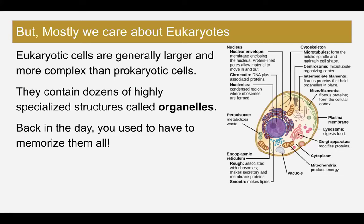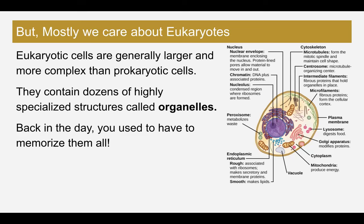In this unit, we are mostly going to be discussing eukaryotes. Eukaryotic cells are generally larger and more complex than prokaryotic cells — they contain dozens of highly specialized structures called organelles. Back in the day, you would have had to memorize all the organelles, but the standards for biology have changed. The focus has shifted away from memorization and more toward understanding, so we'll learn how some organelles function within the cell, but we are not going to memorize all of them.